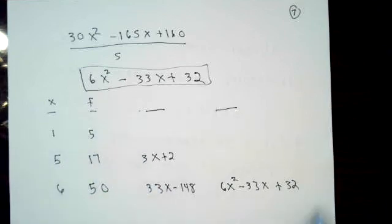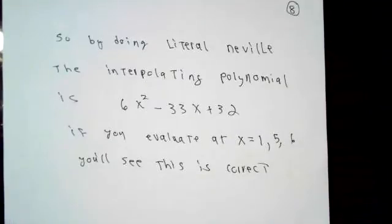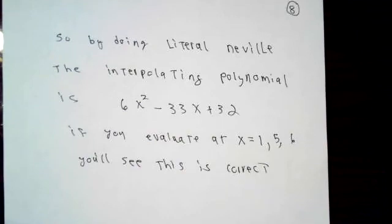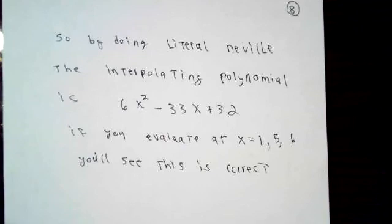This is the interpolating polynomial for points x0, x1, and x2. The completed table now looks like this. Our interpolating polynomial is 6x² minus 33x + 32. Those interested can verify: evaluating at x equal 1 gives 5; evaluating at x1 (which is 5) gives 17; and evaluating at x2 (which is 6) gives 50. This is the unique polynomial of degree no more than 2 that interpolates our data at our 3 data points.